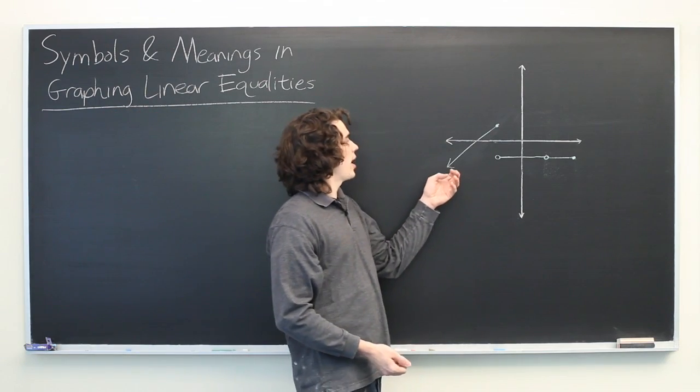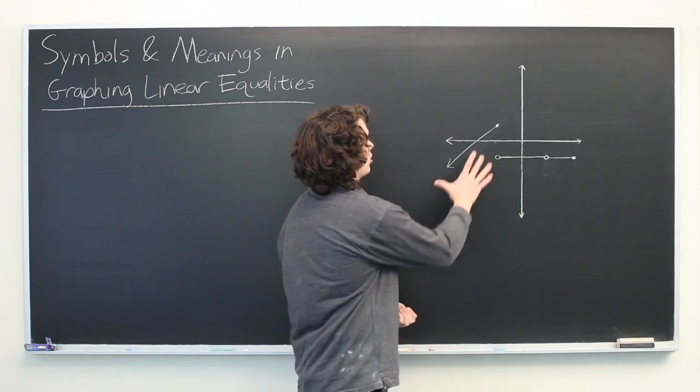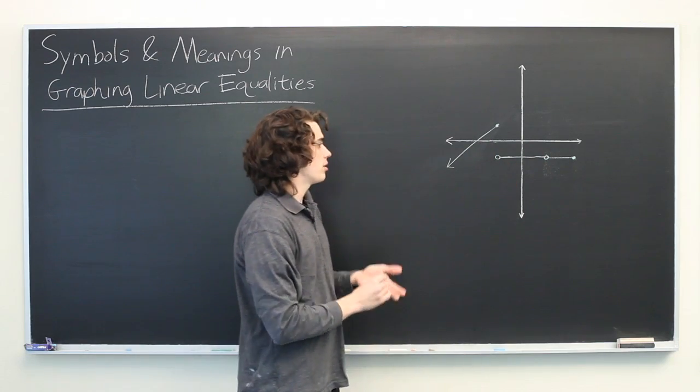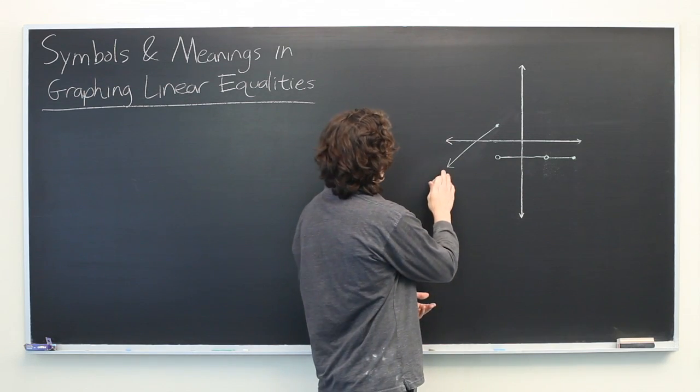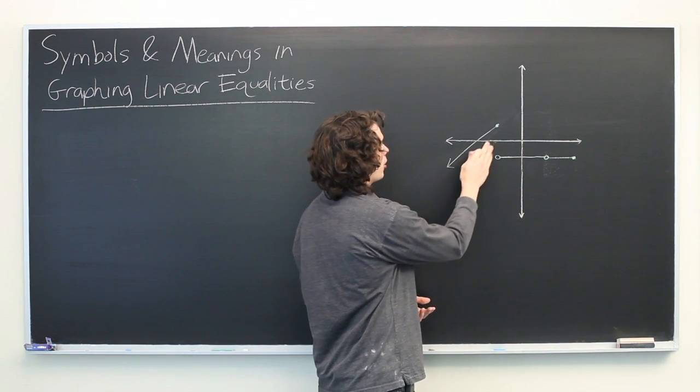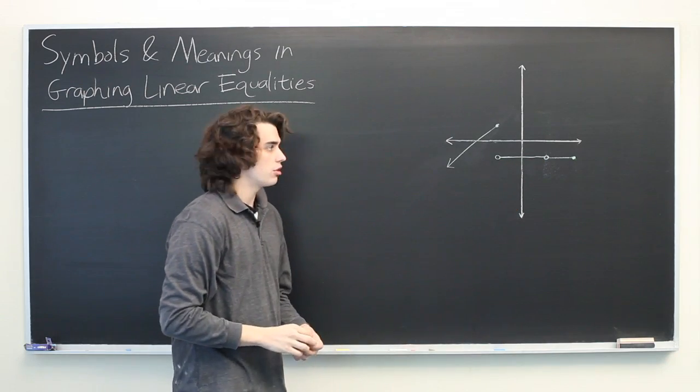So here we have a graph that's a piecewise graph. You can see that it's split into two different chunks, but it's comprised of linear equalities. So we have a couple of different symbols here. This arrow, we have some closed dots, we have some open dots. Let's discuss what they mean.